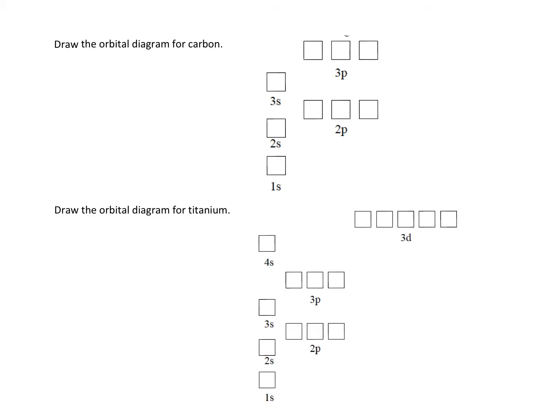S can only have one orbital, P has three, D has five, and F has seven. If we have the orbitals pre-drawn out for us, filling them in is pretty straightforward.